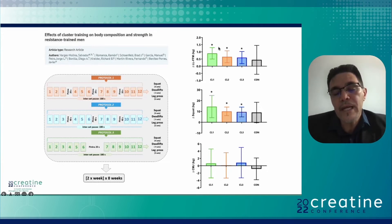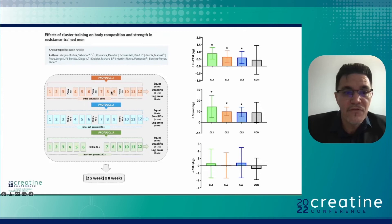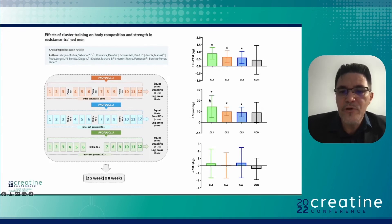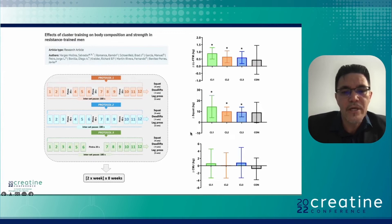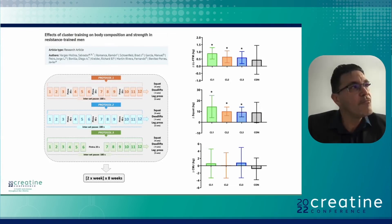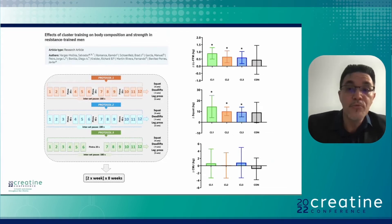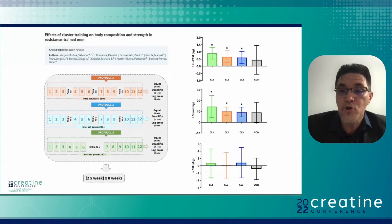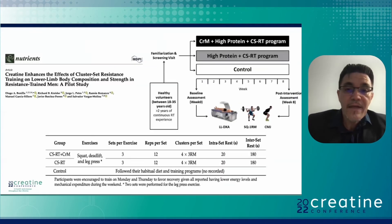There were significant differences across all groups, although the trend was higher for the group using 20-second pauses, particularly for lower-limb strength. A control group was included, but it was not fully controlled — sessions were not monitored, only measured at the beginning and end — so we cannot definitively conclude whether cluster sets were superior to traditional training. What we can confirm is that fat-free mass in the lower limbs increased across all three cluster set protocols.